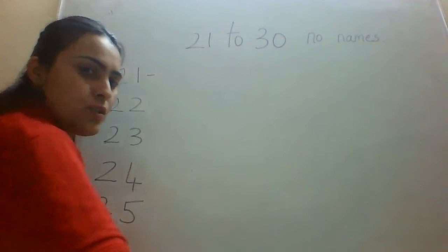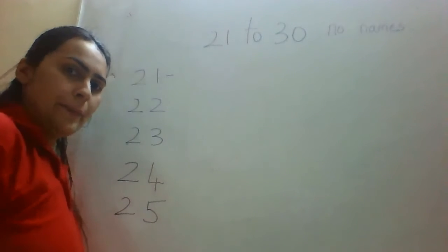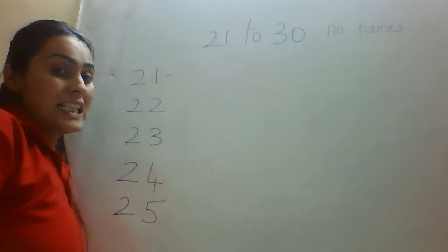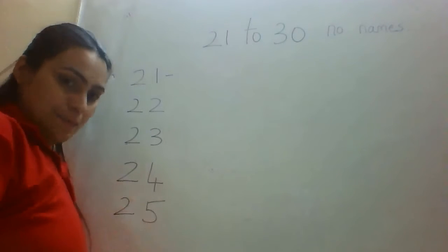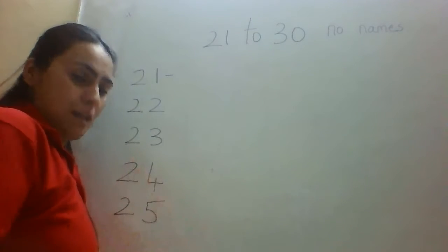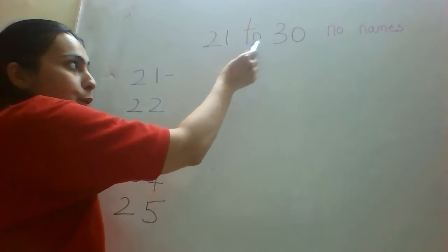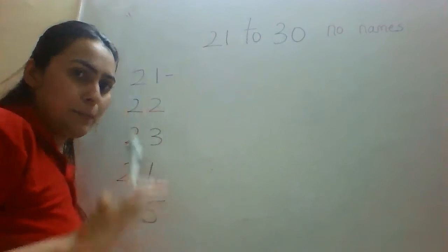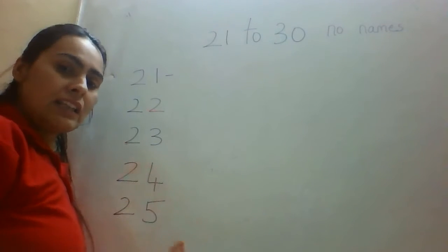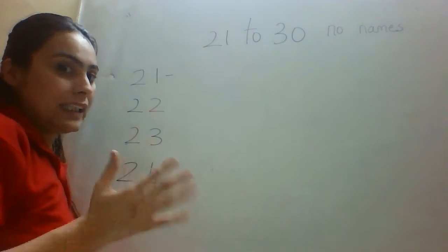Good morning students. So we are going to do today number names, that is number spellings — the spellings of the numbers 21 to 30. In the previous class, we read the numbers 21 to 30.